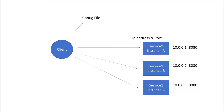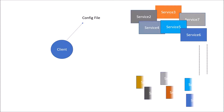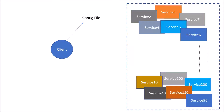This approach works fine in a traditional monolithic architecture. But in the case of microservices, they are generally deployed in the cloud. In a complex cloud-native architecture, there would be a large number of microservices, and since they are hosted on the cloud, their IP addresses would be dynamic in nature. The IP addresses may change due to failure, restart, or auto-scaling. So it is very difficult to use a hard-coded config file approach for microservices — it needs to be dynamic.